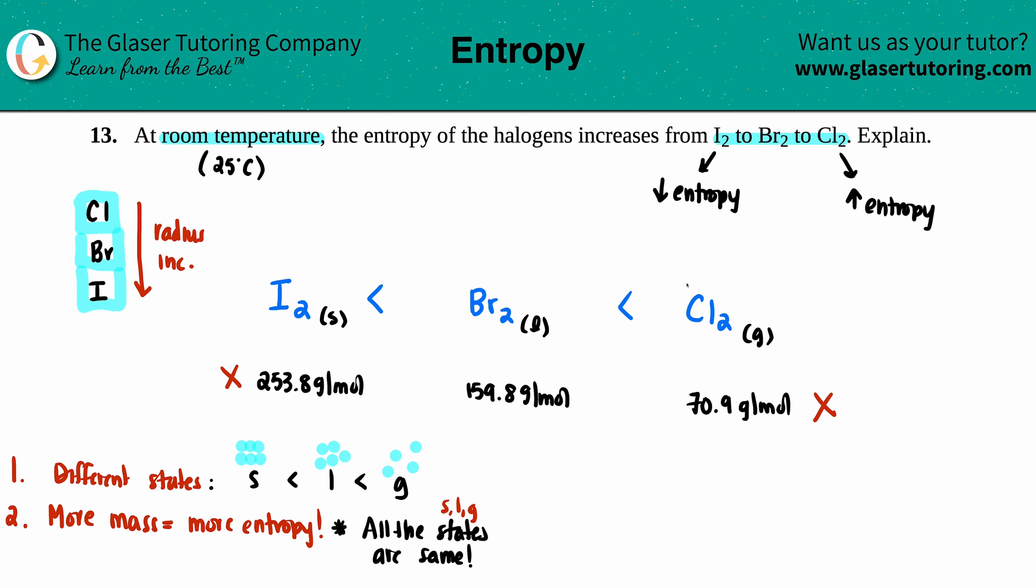I₂ is a solid, bromine is a liquid, chlorine is a gas, and that's what triggers this increase in entropy. And there you go. I hope this helped, let me know in the comments. Thank you so much for viewing the video, subscribe to the channel, and I'll be talking to you in another lesson. Have a great day, bye bye!